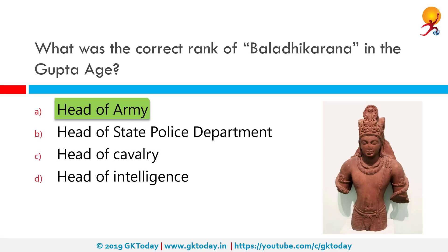In contrast to the Mauryan Empire, the Guptas introduced several military innovations to Indian warfare via their contact with steppe nomads and Hellenes. Chief amongst these was the use of heavy cavalry archers and heavy sword cavalry. The heavy cavalry formed the core of the Gupta army and were supported by the traditional Indian army elements of elephants and light infantry.